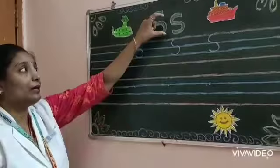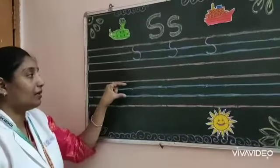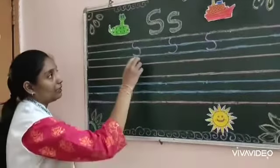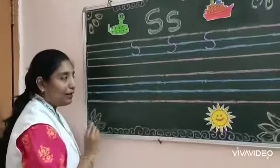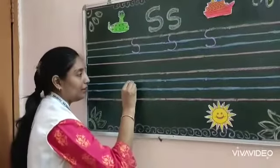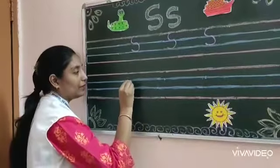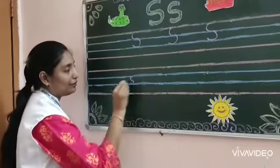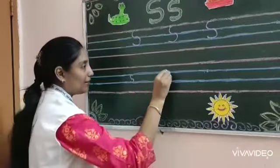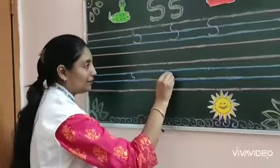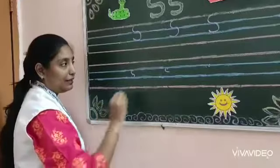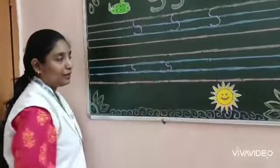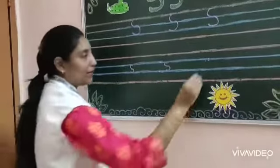Now baby S. Baby S will be like the two blue lines, just like Mama S. Make a curve, and again make a curve. Make a C, and again make a curve. This is baby S.